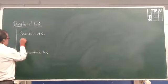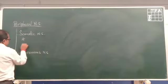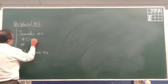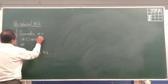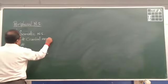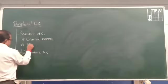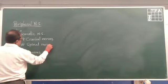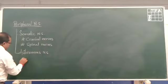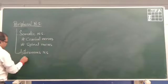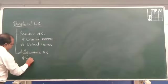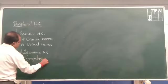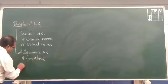The somatic nervous system consists of two types of nerves: cranial nerves and spinal nerves. And the autonomic nervous system consists of two systems — sympathetic and parasympathetic.